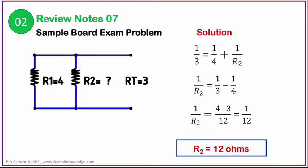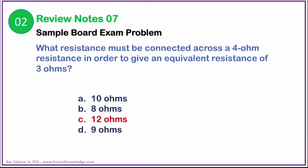Here is our parallel resistance formula: 1 over RT is equal to 1 over R1 plus 1 over R2. Using our fractional solution, the common denominator is 12. We can say that the resistance to be connected parallel to 4 ohms is 12 ohms to give a total resistance of 3 ohms. So our R2 is equal to 12 ohms. Our choices give us letter C, 12 ohms.